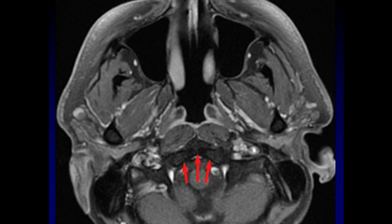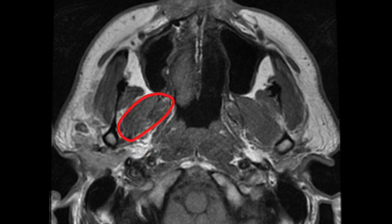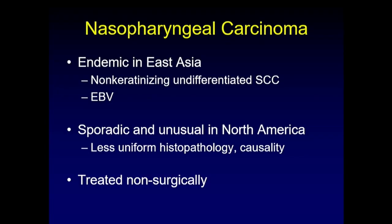The three arrows point to the clivus — the bony structure along the back of the nasopharynx that separates it from the intracranial vault. Looking a little lower, we see the parapharyngeal fat laterally — a very important structure for anatomic relationships. Just anterior to that are the medial and lateral pterygoid muscles. That is the anatomy we'll reference as we discuss nasopharyngeal carcinoma.